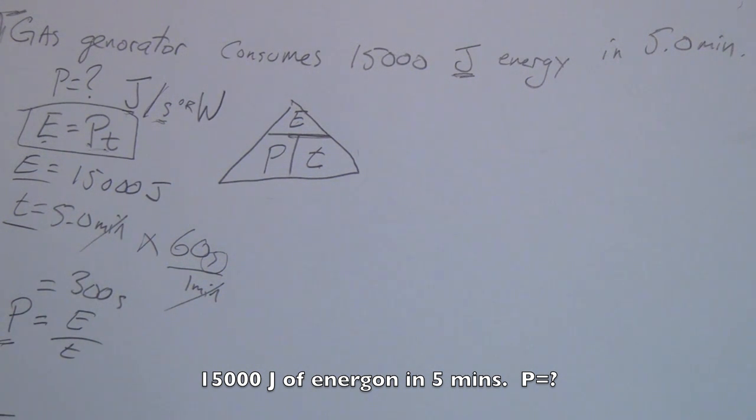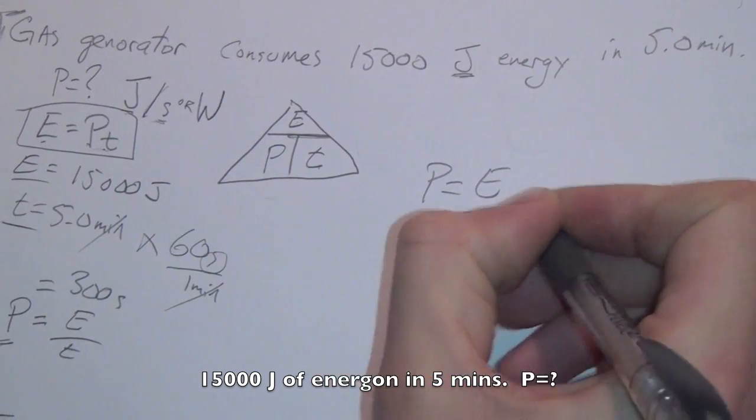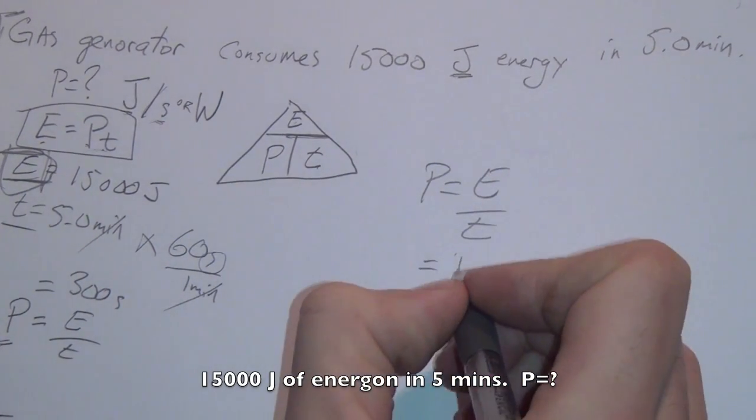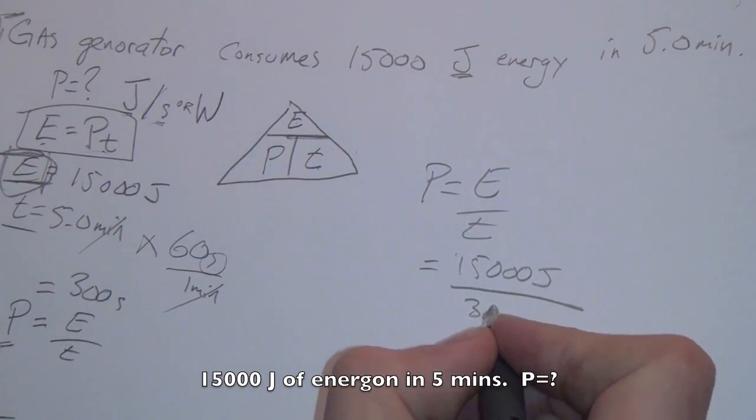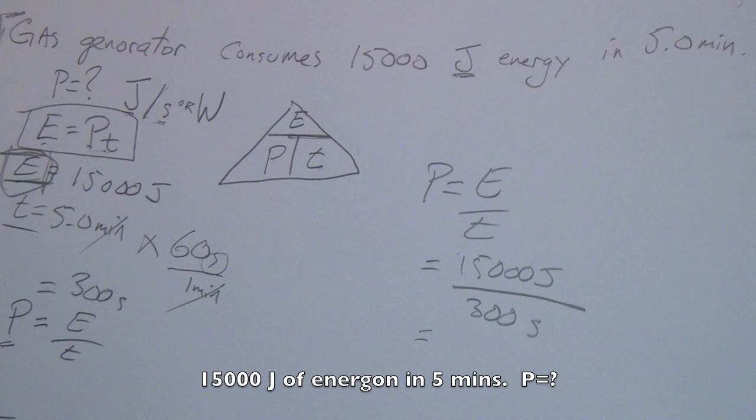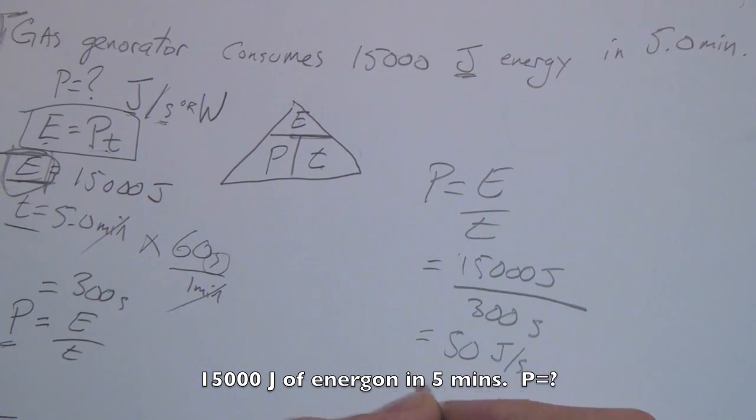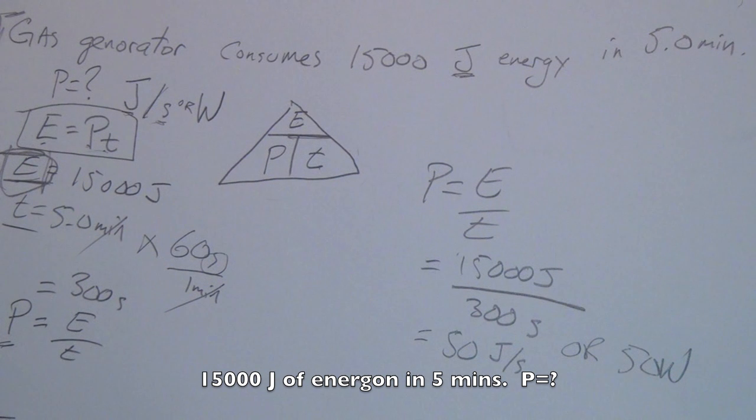So if P equals E over T, all we really have to do is take our converted seconds and our 15,000 joules, and we're going to have to input it in to plug this number into this formula. So we have, I'm going to work over here, P equals E over T, which equals energy. See, I'm glad I wrote this down because now my whole problem is nice and organized. 15,000 joules divided by our time, which we converted into seconds, 300 seconds. And if you were to go ahead and punch that into your calculator, you're going to be getting a grand total of 50 joules per second or 50 watts. Understand? Let's go on to the next question.